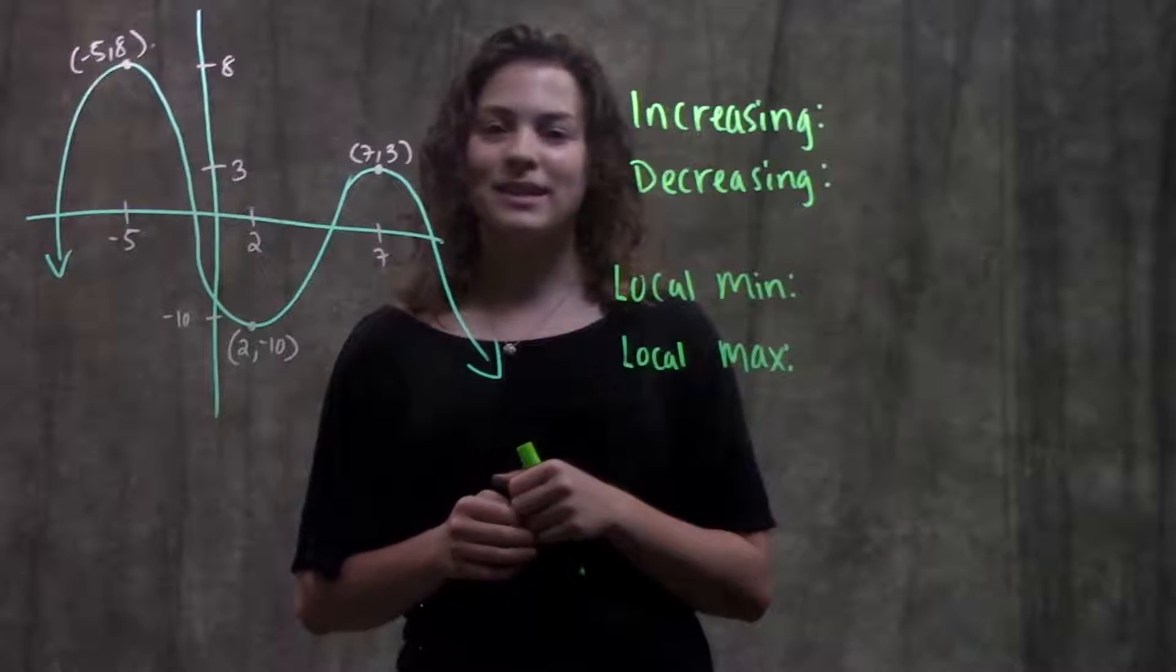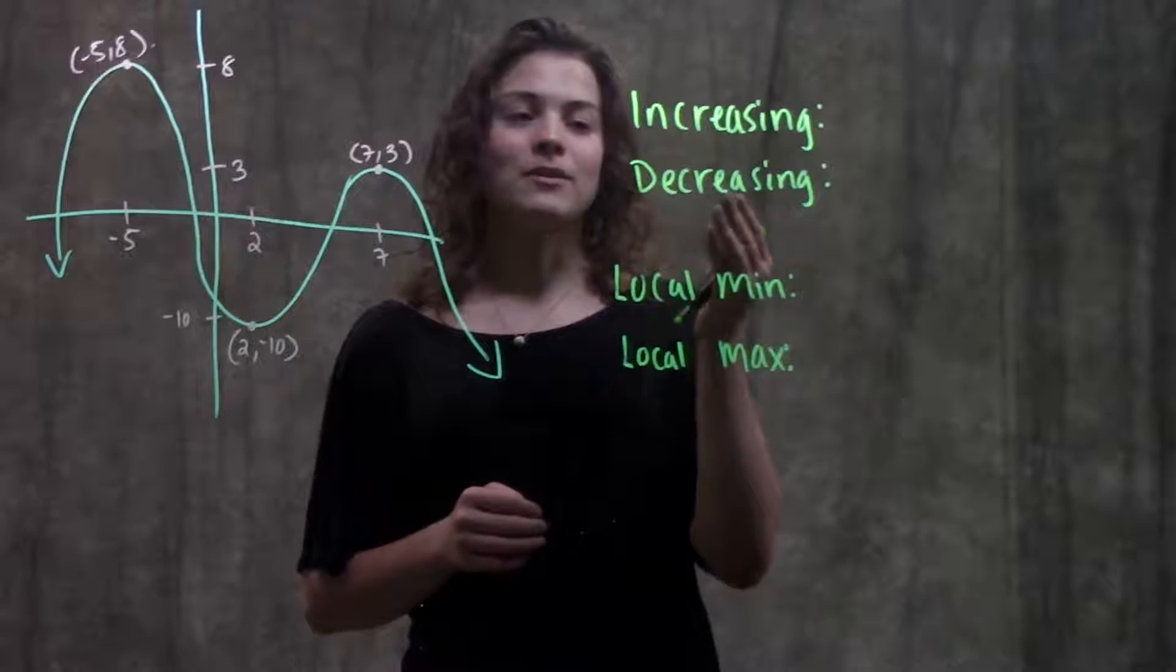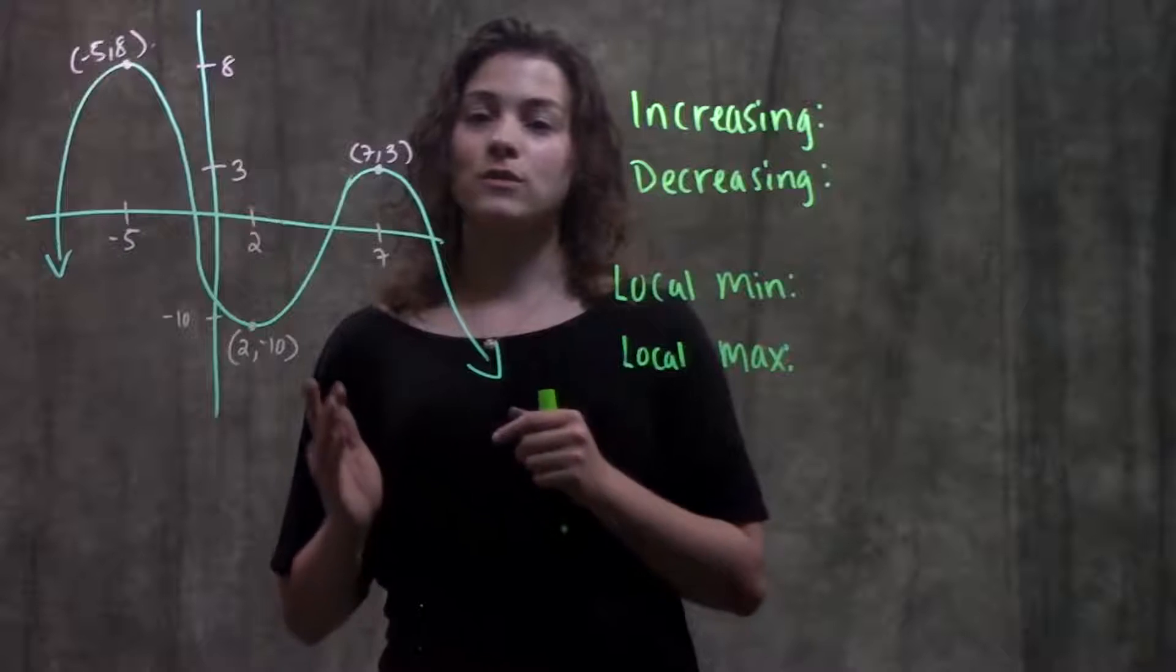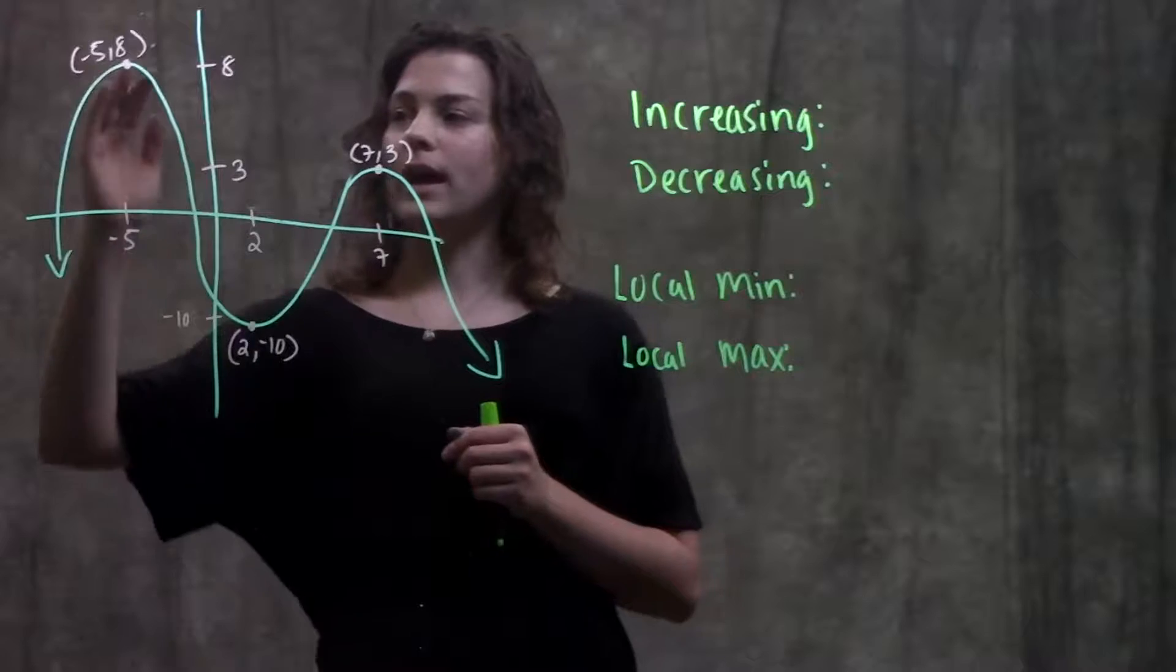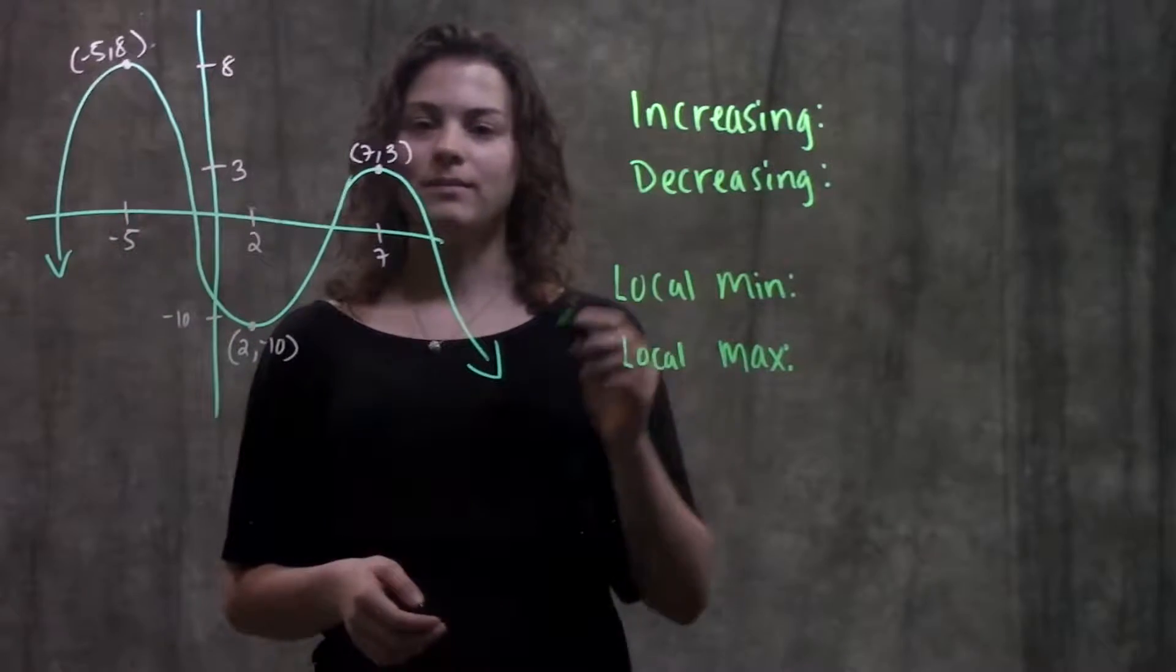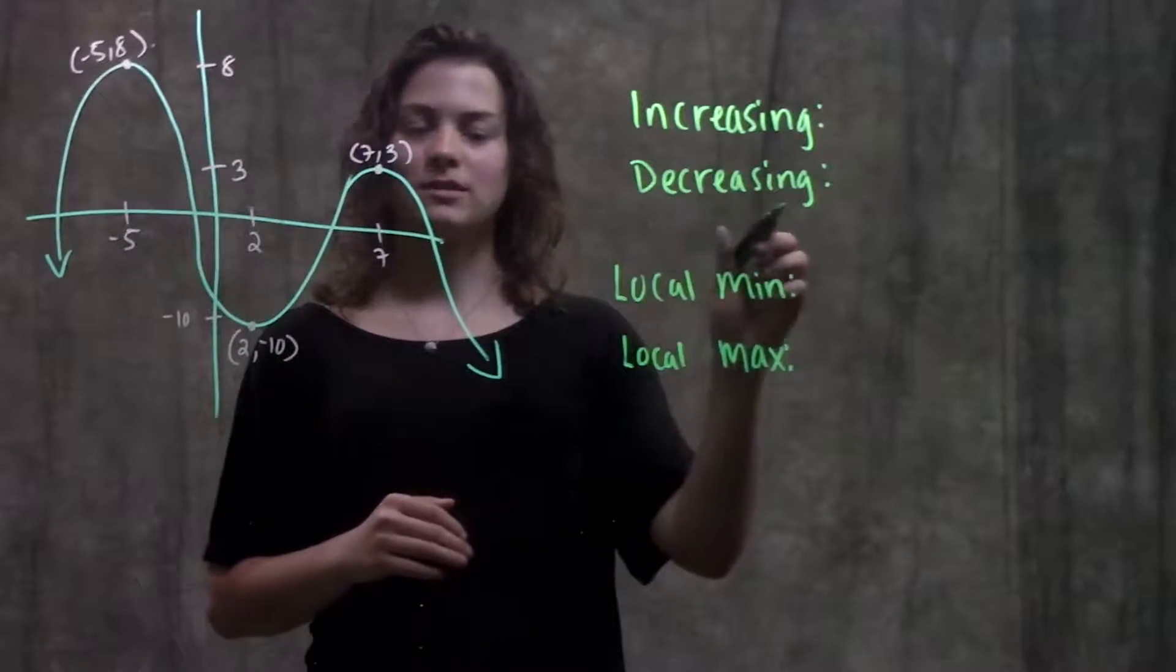Starting with increasing and decreasing, to find those intervals we just look to see wherever the slope is positive or wherever the function is going up and when it's going down. Wherever it's going up, that means our function is increasing. Wherever it's going down, that means our function is decreasing.